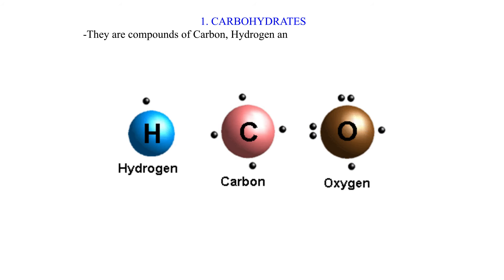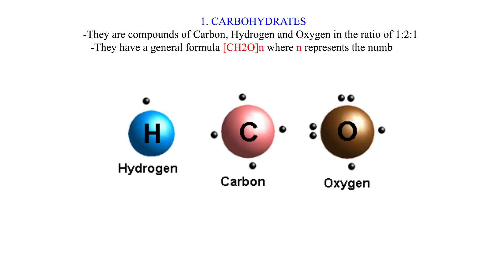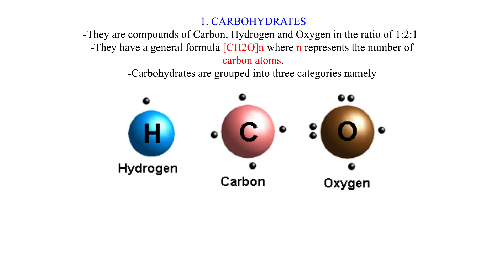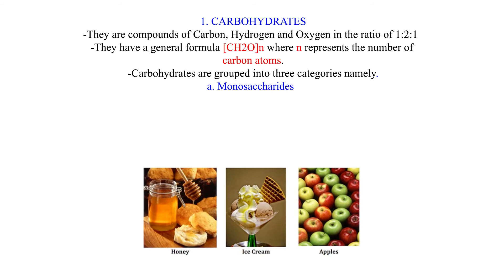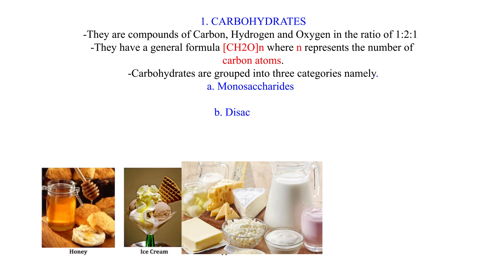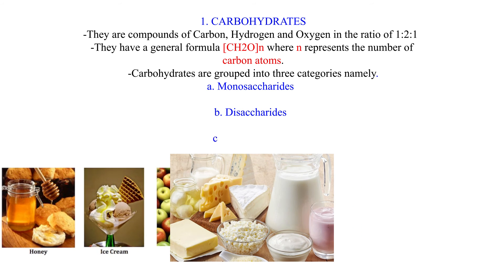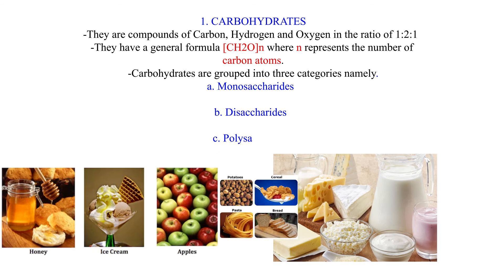Carbohydrates are compounds of carbon, hydrogen, and oxygen in the ratio of 1:2:1. They have a general formula (CH₂O)n, where n represents the number of carbon atoms. Carbohydrates are grouped into three categories: a) monosaccharides, b) disaccharides, c) polysaccharides.